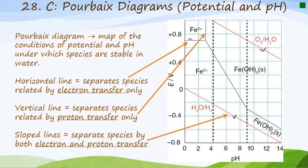We then have a vertical line, such as this one over here, indicated by the orange arrow, and that is going to separate species related by proton transfer only. So again, you need to refresh your memories about how graphs work. A parallel line to a certain axis indicates independence of that variable.